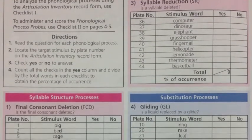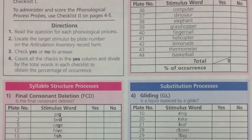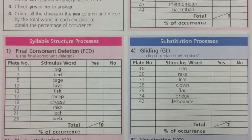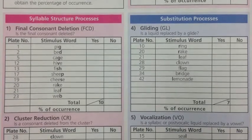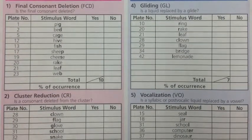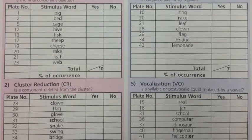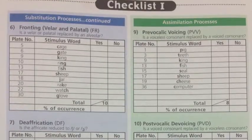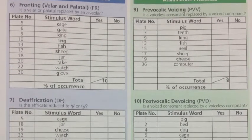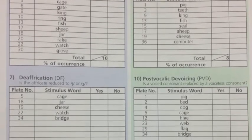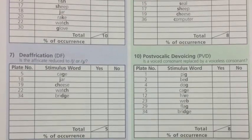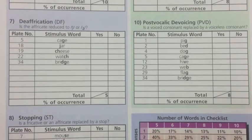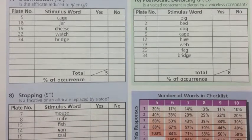The second and third pages are solely for checklist one. The ten phonological processes are provided amongst these two pages with boxes for each. Each phonological process is tested with yes and no responses provided by the targeted words from the articulation inventory. For each, all the questions answered yes are counted and divided by the total number of words in each checklist. The percentage of occurrence is then calculated.